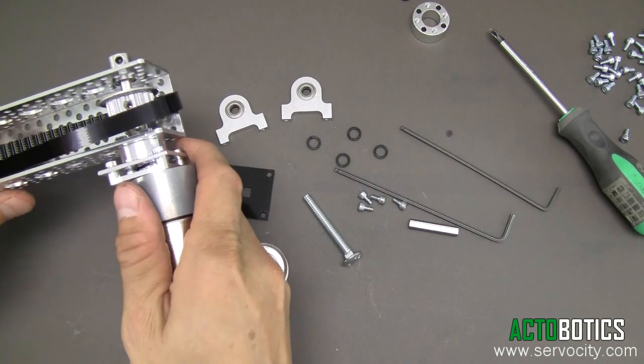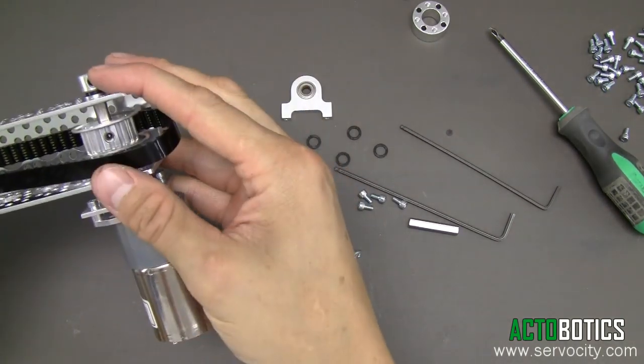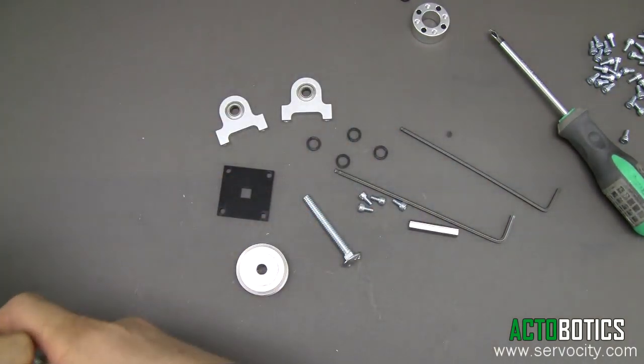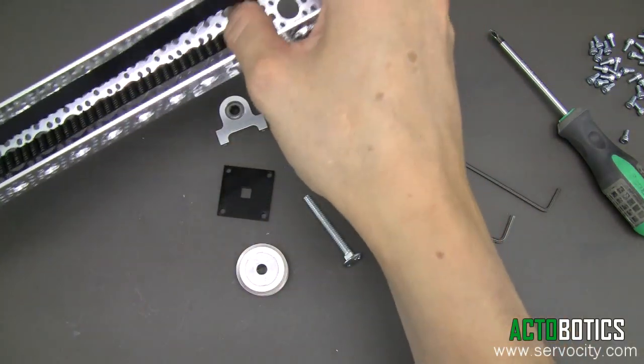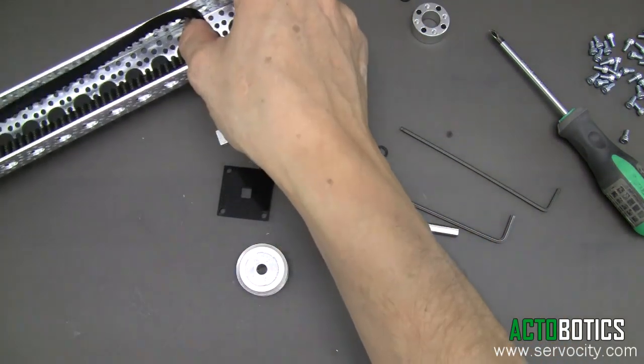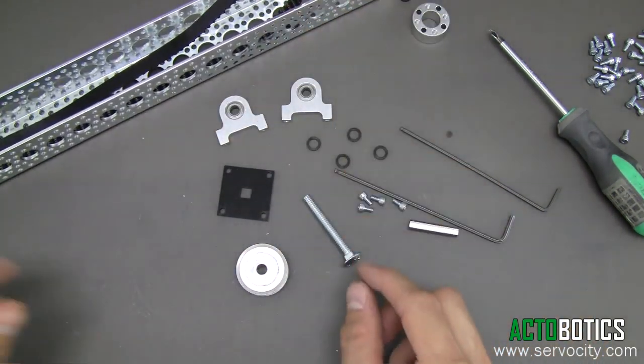Now that you've finished attaching the gear motor to the gear motor mount and subsequently to the channel, we're ready to deal with the other end of the channel, which is going to be the belt tensioner. Let's go ahead and begin.